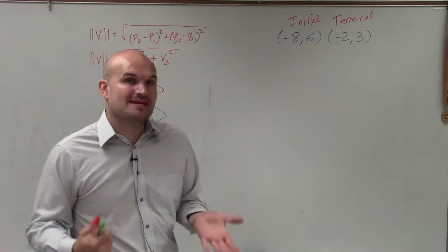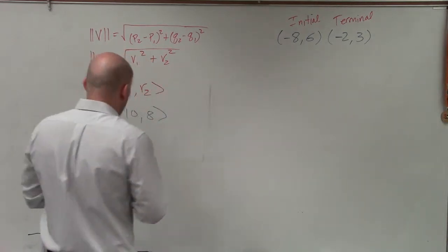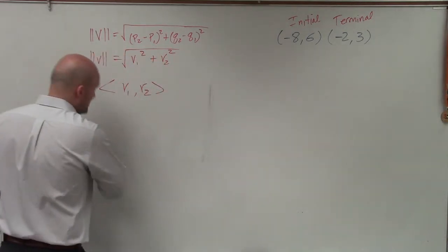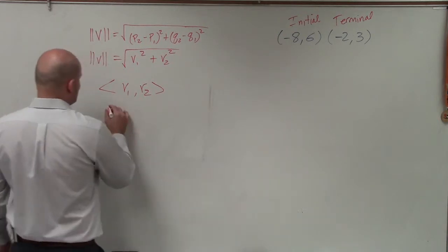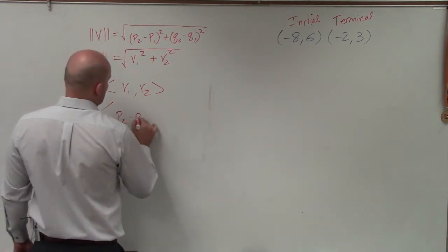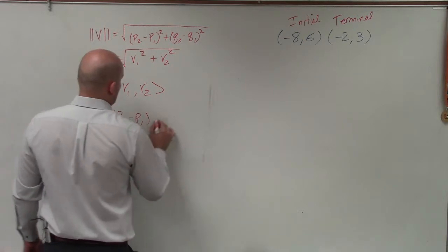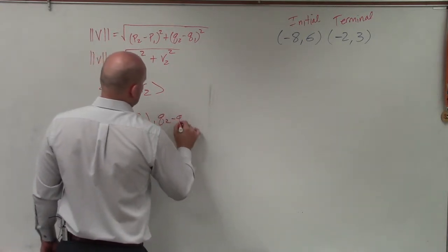Preferably, a lot of times we like to find the component form of a vector. To determine the component form of a vector, basically what we're doing is taking p2 minus p1, comma, q2 minus q1.